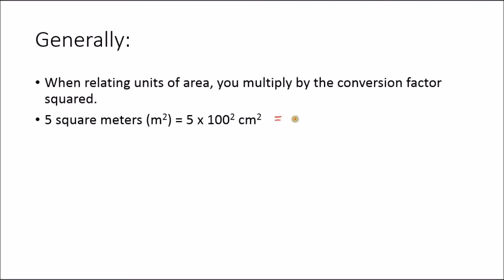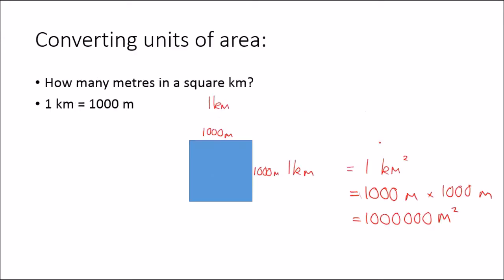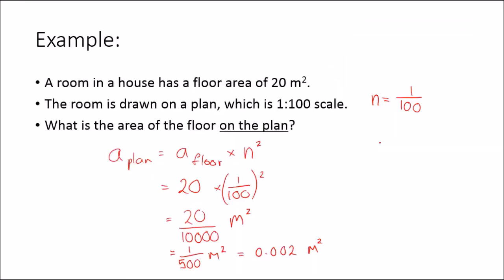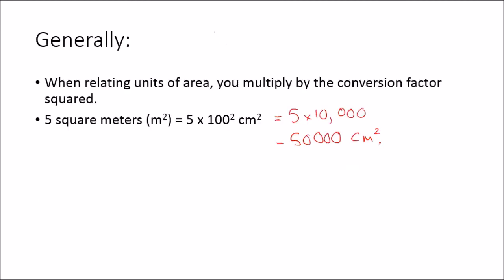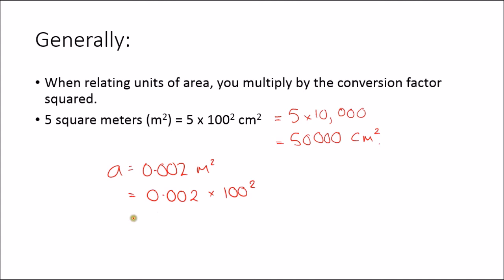You can multiply by the conversion factor squared. So 5 square meters in centimeters squared is 5 times 100 squared. 100 squared is 10,000, so it's 5 times 10,000, which equals 50,000 centimeters squared. Now jumping back to our previous example about the plan, we had an area of 0.002 meters squared. Converting to centimeters squared: 0.002 times 100 squared, which is 10,000. So 0.002 times 10,000 gives us 20 centimeters squared.